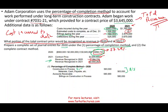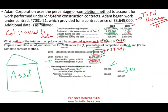At year-end, you record the income statement entry: debit Construction Expense $563,000 and credit Revenue $994,773. The difference — $431,733 — is your gross profit. This gross profit is then debited to Construction in Process. So CIP holds both the cost and the profit. At the end of the project, CIP equals total billings, and the two accounts are closed against each other.